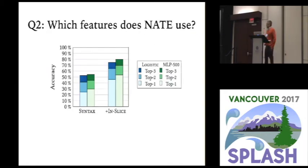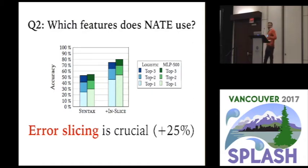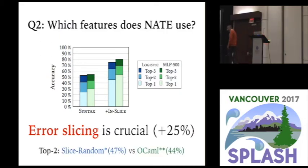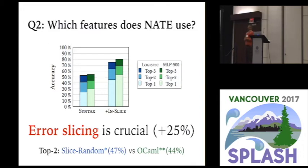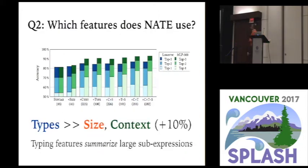What features does NAT actually find useful? As it turns out, the single biggest bang for the buck is error slicing. That already takes your program — whatever, 20, 30, 40 lines — and whittles it down to like five lines. None of these results would be at all useful without slicing; it literally gives us a 25% bump in accuracy. In fact, here's a surprising result: if you just take the slice and pick randomly from it — two locations at random — you do better than OCaml. To be fair, OCaml just returns one location.